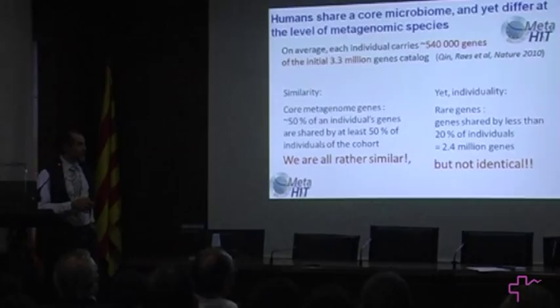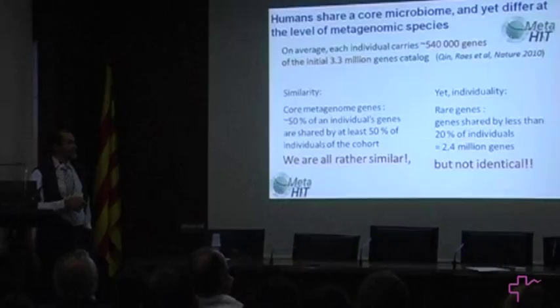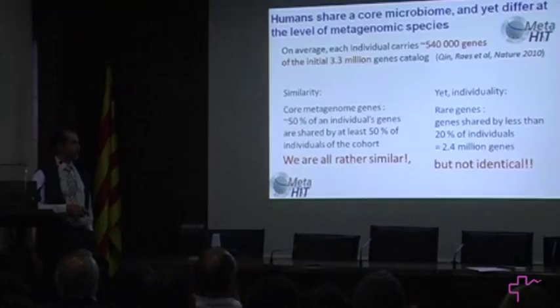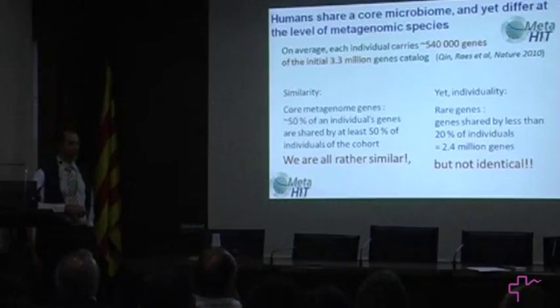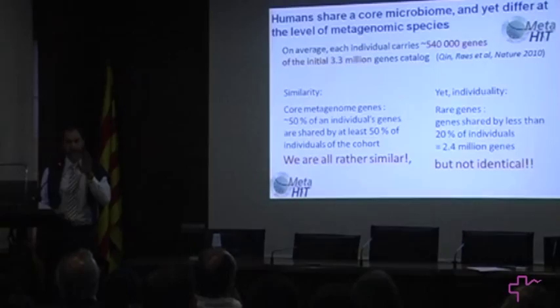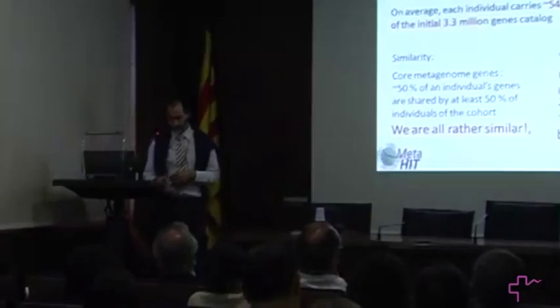We do find individuality — what we call rare genes, shared by less than 20% of the people around you — and they represent a very large fraction: 2.4 million genes out of the gene catalog we were working with. So we are not identical, and for each person we can identify bacterial signatures that are specific to that individual.